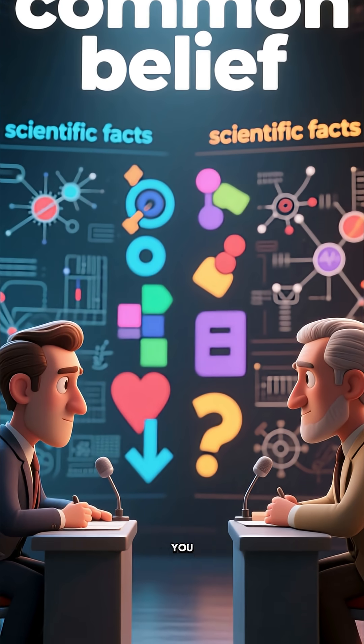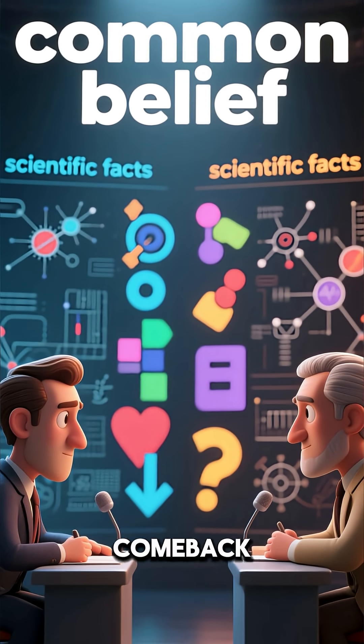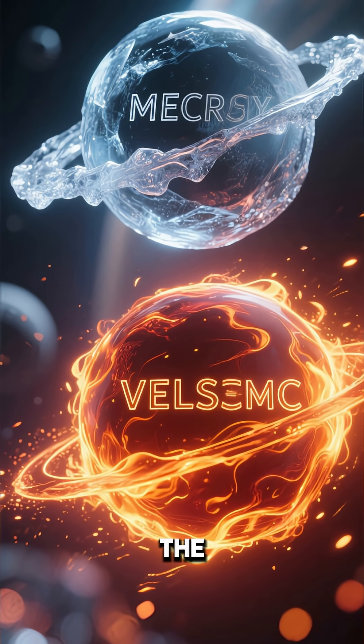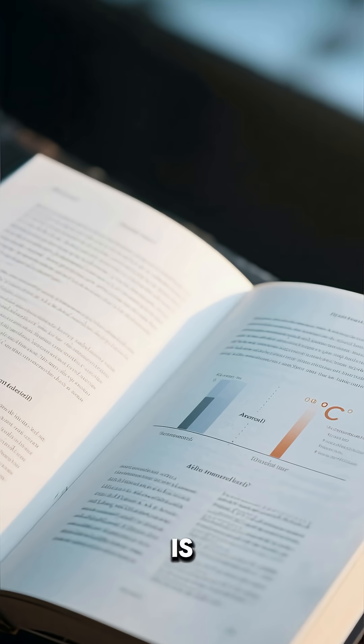So the next time someone tells you the closest planet to the sun has to be the hottest, you have the ultimate comeback. You tell them about Mercury, the freezing rock next to the sun, and Venus, the planet wrapped in a deadly carbon dioxide blanket. Distance is just one part of the story. The atmosphere is what writes the epic, final chapter.